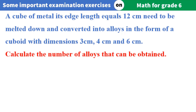A cube of metal with edge length equals 12 centimeters needs to be melted down and converted into alloys in the form of a cuboid with dimensions 3 centimeters, 4 centimeters and 6 centimeters. Calculate the number of alloys that can be obtained.